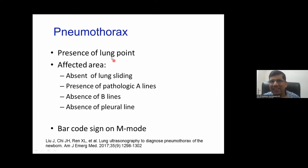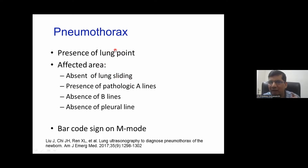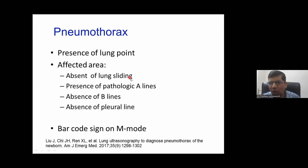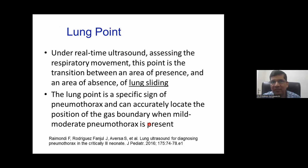Absent lung sliding goes hand in hand with pneumothorax. The presence of the lung point — meaning a transition between A-lines and B-lines — along with pathological A-lines and the barcode sign: these four are features of pneumothorax.